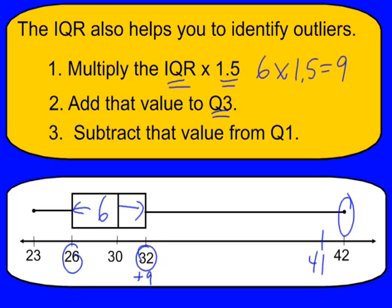You also take that number 9 and we subtract it from our first quartile. And the first quartile is 26. So if I subtract 9 from that, I get 17. So anything past 17 would be an outlier. We don't have any outliers on this side of the data. So the IQR can actually be very useful in determining if you have any outliers in your data.